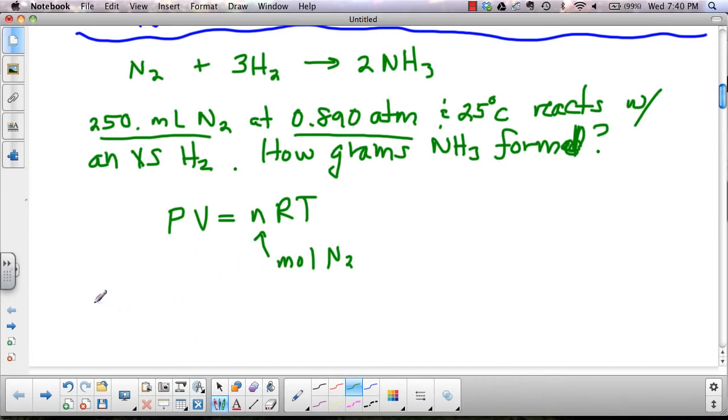So pressure, 0.890. Our volume, got to change it to liters, right? So 0.250. Moles are 0.0821. And our temperature, 25 plus 273, 298. So our moles, if we do this out, is 0.00909 moles of nitrogen.